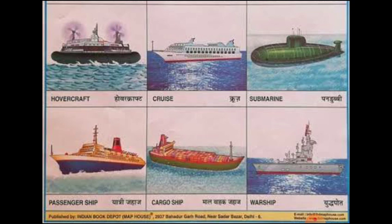Cargo ships carry goods — big cartons and machinery — from one place to another. Passengers do not travel on cargo ships. Warships are used in time of war and in international waters for security reasons. A harbour is the place where ships stay. Oil tankers carry oil only, and there are also oil tankers in the sea used to drill under the ground and find oil. An aircraft carrier is a warship that also carries aircraft on it.